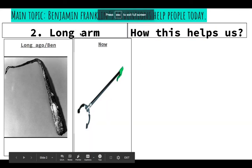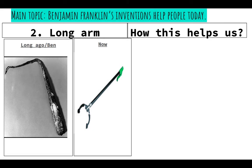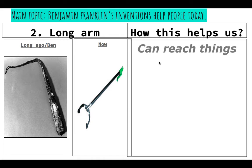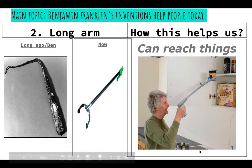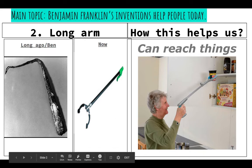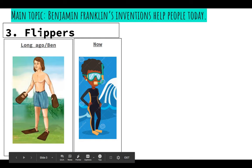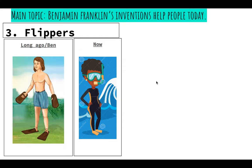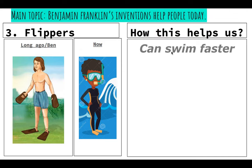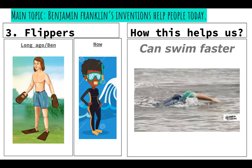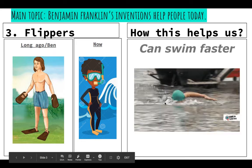Now we're going to move on. Long ago, Benjamin Franklin invented the long arm, or the grabber — that was another name for it. How does it help us? Now we can reach things. You can also think about your picture — draw the invention that he made. Long ago, Benjamin Franklin invented flippers. Now they can help us swim faster. You can draw someone wearing the flippers or trying to swim with flippers on.